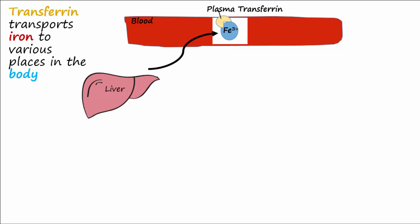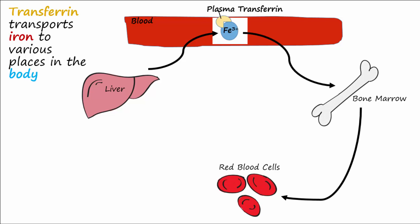Most of the transferrin-bound iron will end up in the bone marrow where it is used to make red blood cells. To a lesser extent, it is sent to the hepatocytes in the liver, which is the main storage organ for iron.